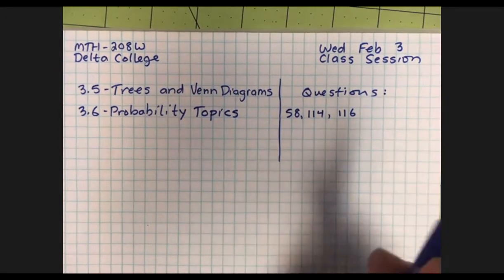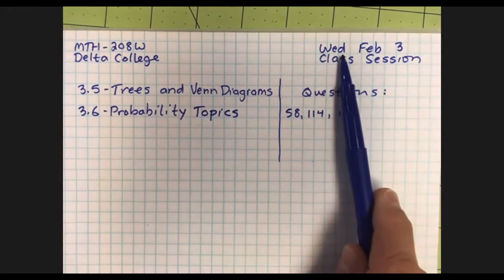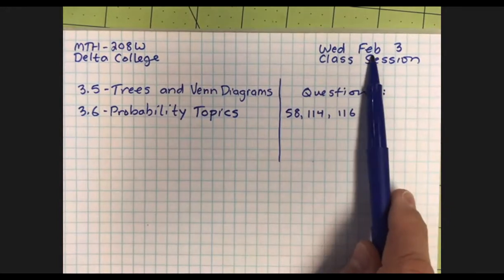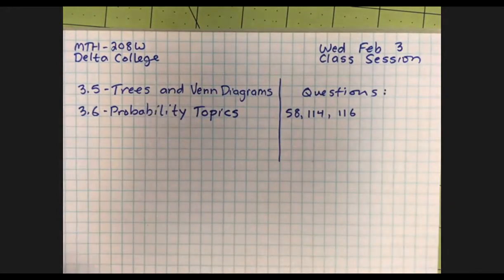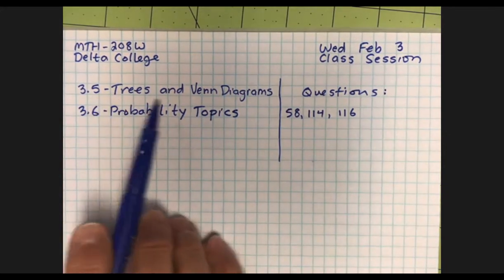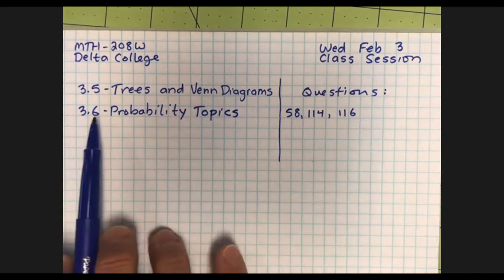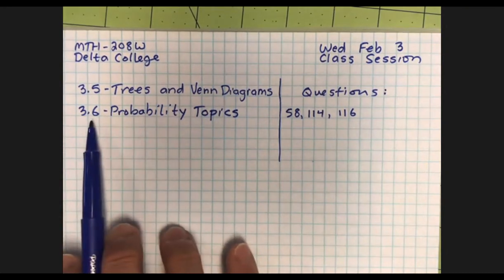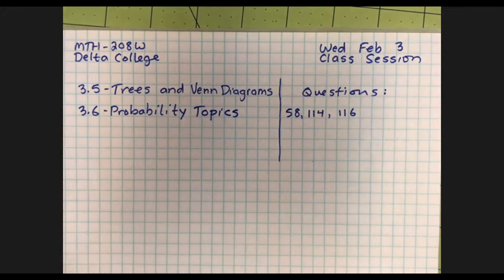Good afternoon, this is Wednesday, February 1st or February 3rd. This is our recorded class session and we are talking about trees and Venn diagrams, and then we're going to do a fun probability experiment in section 3.6.